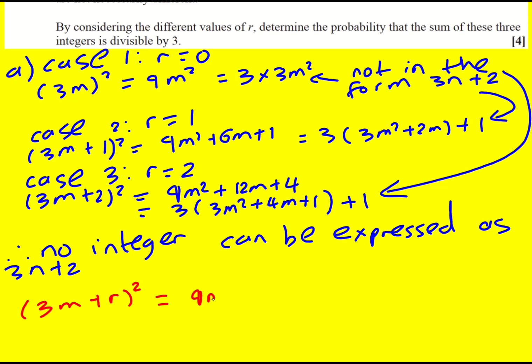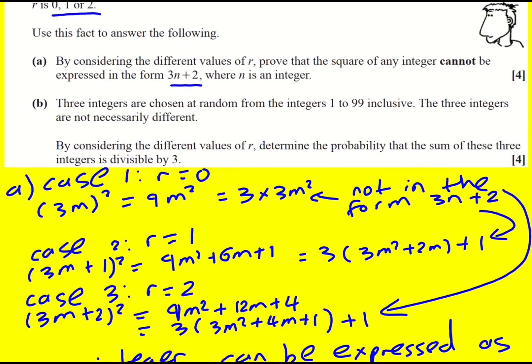So we're going to get 9m squared plus 6rm plus r squared. And then at that point, you can just substitute in r is equal to 0, 1, and 2, and very quickly get 9m squared, 9m squared plus 6m plus 1, and 9m squared plus 12m plus 4. By doing the general case, we just, we don't have to expand it three times, we just do it once, and then substitute in, and then make the same conclusion. So I just wanted to talk about that, because it is, that is the most efficient way of doing that question.